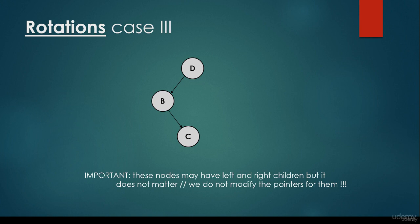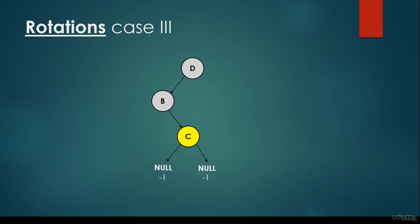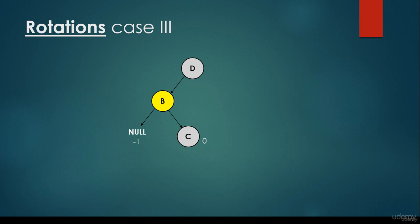What about case 3? We have the so-called left-right situation, where the root node has a left child and this left child has a right child. It's important that these nodes may have left and right children of their own, but it doesn't matter because we do not modify the pointers for them. For example, B can have a left child, but if we change the reference for B, its left child remains the same — so we don't have to bother about it.